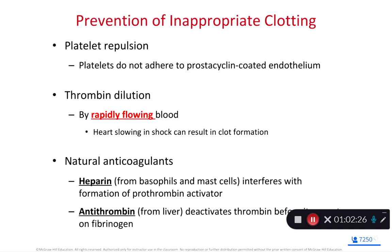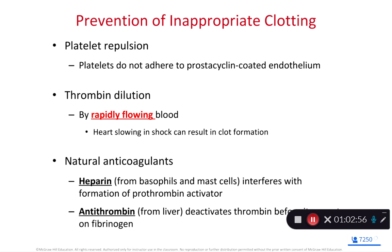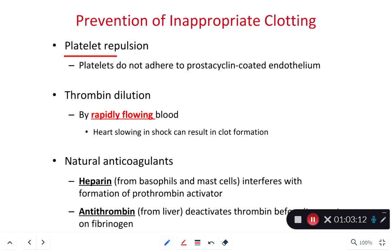In a healthy blood vessel, the smooth inner lining prevents platelets from sticking inappropriately. Natural anti-clotting agents include heparin from basophils and antithrombin factors from the liver. Other organisms that feed on blood — like leeches and mosquitoes — also release anticoagulants. Mosquitoes release anticoagulants while feeding. Medical leeches release hirudin. Certain snakes produce ancrod. If blood clotting factors are insufficient, the result is hemophilia.